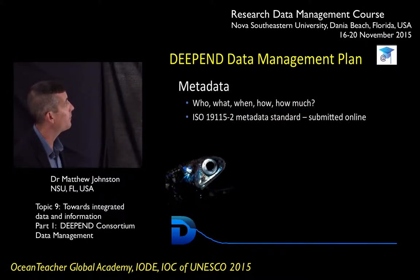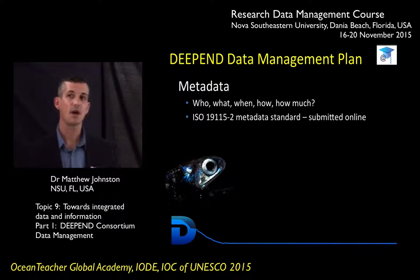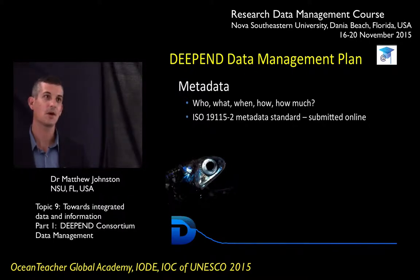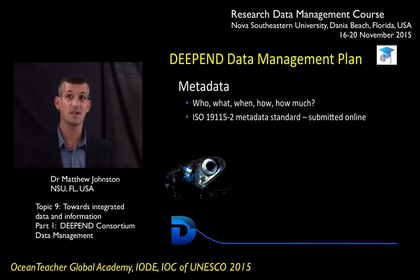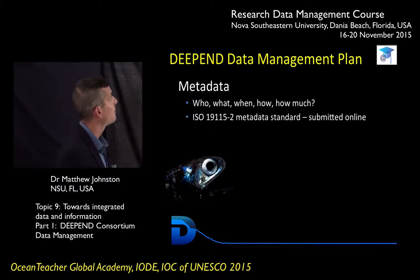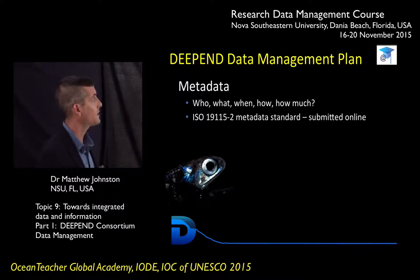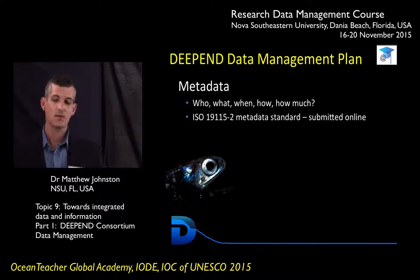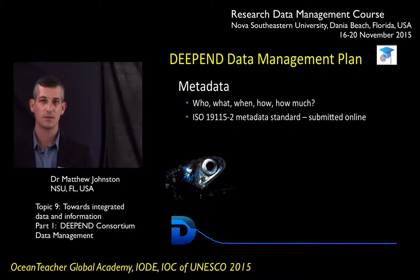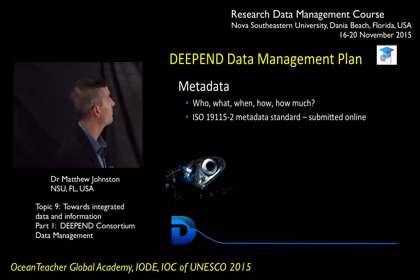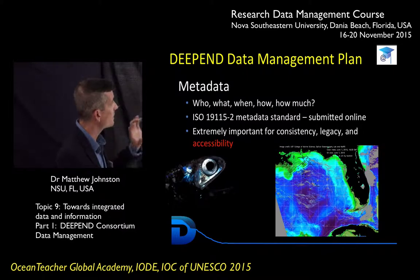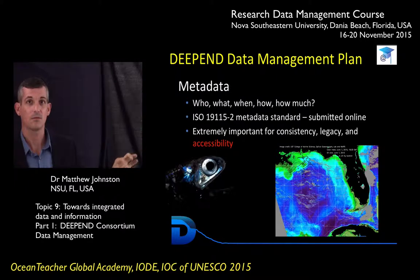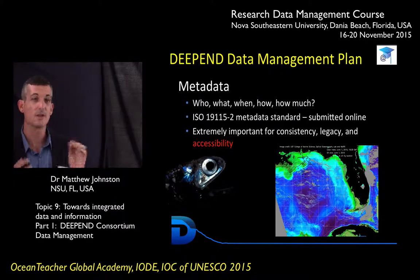Finally, there's metadata. Metadata is basically the who, what, when, where, and how much — it describes your data. When a researcher or the public goes in and says 'I want this dataset, but what's actually in it? What do I need to open it?' — that's what metadata is, and it's very, very important. GRIIDC has set up a metadata editor online, so we simply go in and fill out a form using the ISO standard, and it's then attached to the registered dataset. People can read the metadata to see if it's what they want, then download it if so. Metadata is extremely important for consistency, legacy, and accessibility — we want this data available for future generations, so it needs to be standardized.